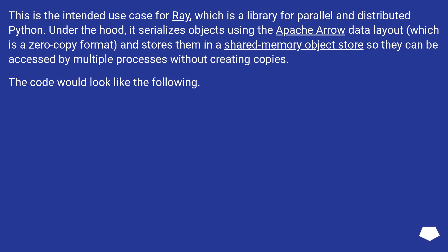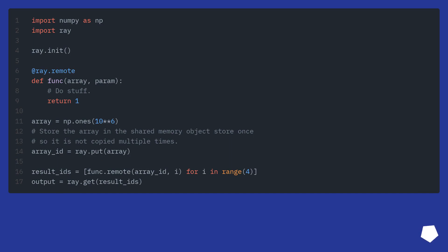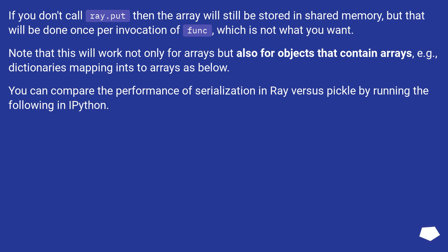This is the intended use case for Ray, which is a library for parallel and distributed Python. Under the hood, it serializes objects using the Apache Arrow data layout, which is a zero-copy format, and stores them in a shared memory object store so they can be accessed by multiple processes without creating copies. If you don't call ray.put then the array will still be stored in shared memory, but that will be done once per invocation of func, which is not what you want. Note that this will work not only for arrays but also for objects that contain arrays, for example, dictionaries mapping into arrays.